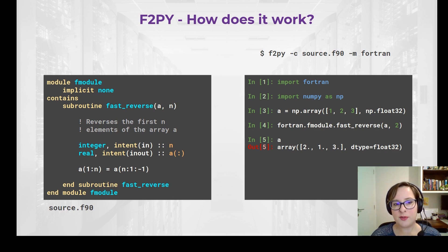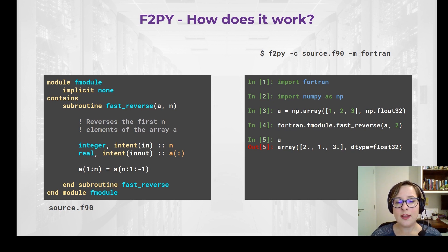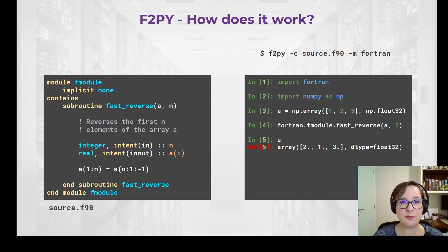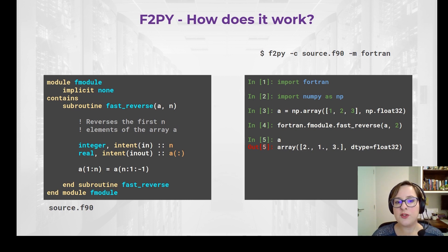Once we have our subroutine ready, we can then use the f2py command line tool to compile the fmodule module into a C extension for Python. Now you can open your Python console and import the module you have just built with f2py. In the example, I have an array created with the data type of float32. This is because we have declared the array A in the Fortran file as a real variable, so you have to be careful about declaring compatible data types between Fortran and Python. After that, we can just call our subroutine and we can see that it works — it actually reverses the first two elements of the array A, as expected.